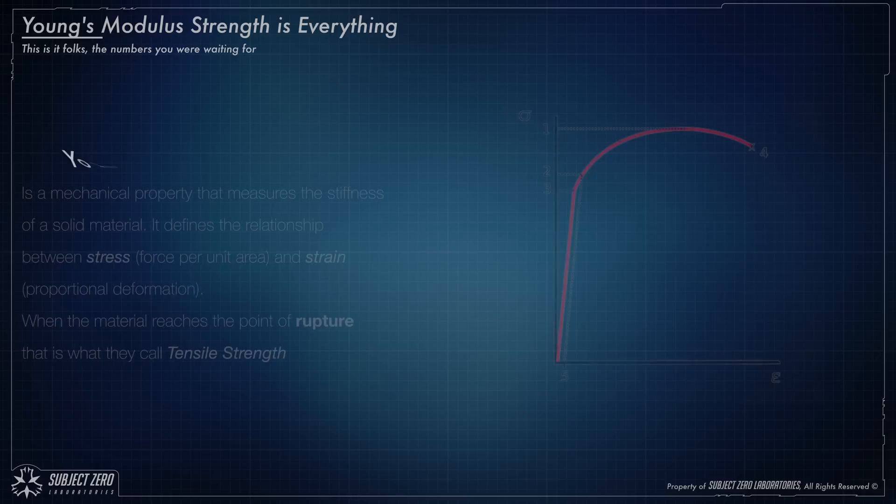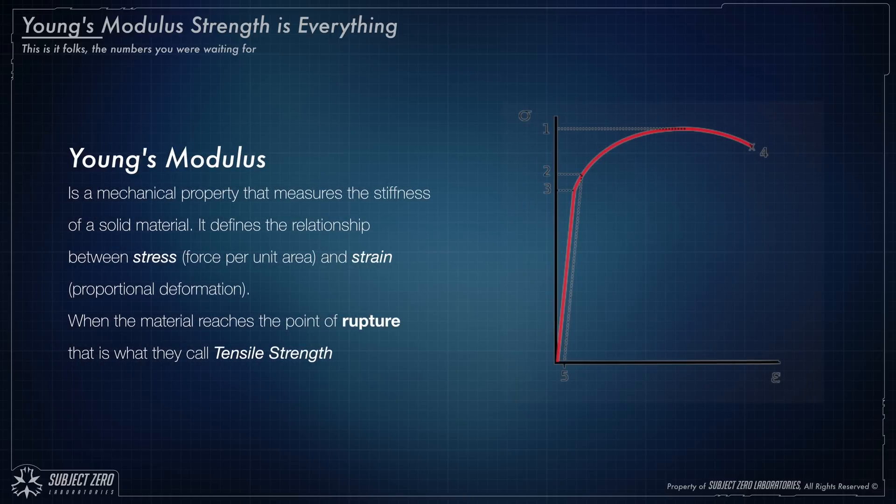For those of you that don't know what a young modulus is, it's a mechanical property that measures the stiffness of a solid material. It defines the relationship between stress, force per unit area, and strain, proportional deformation. When the material reaches the point of rupture, that is what they call tensile strength. So, don't confuse both.